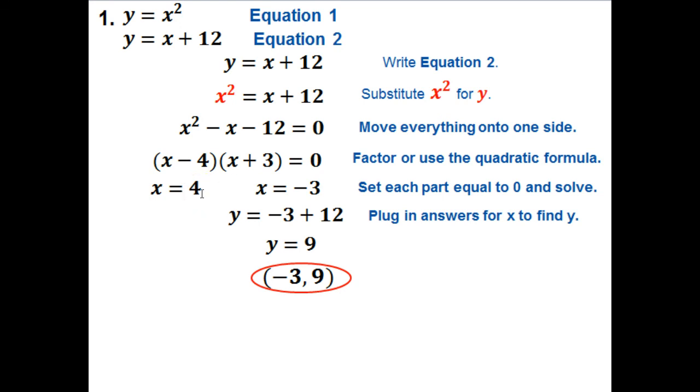Now for x = 4. Using the same equation, y = x + 12, I substitute: y = 4 + 12. So y equals 16. If x equals 4, then y equals 16. As an ordered pair, that's (4, 16).